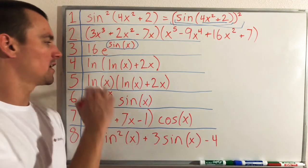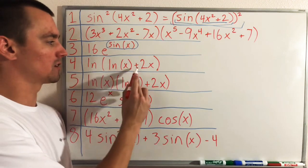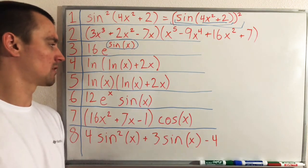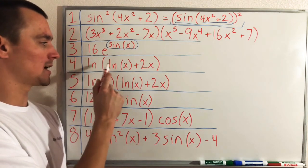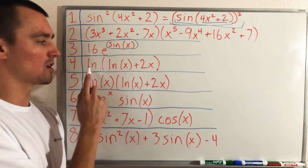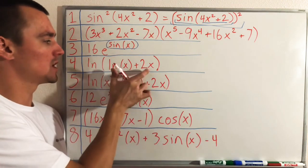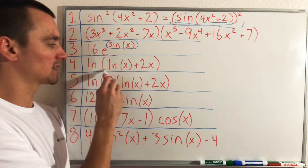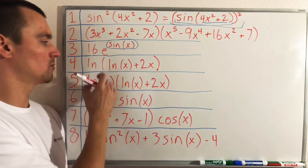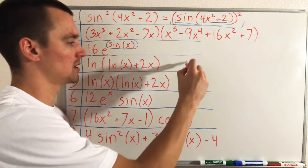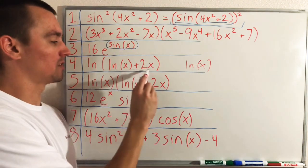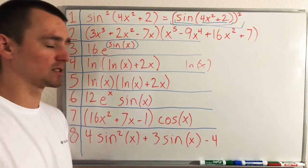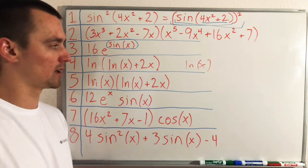Example four: natural log of (ln(x) + 2x). We don't have any products or multiplication here. Natural log of (ln(x) + 2x) is not saying natural log times natural log of x plus 2x — rather, ln(x) + 2x is a function being plugged into the natural log. So we have a composite function, and chain rule is the way to go.